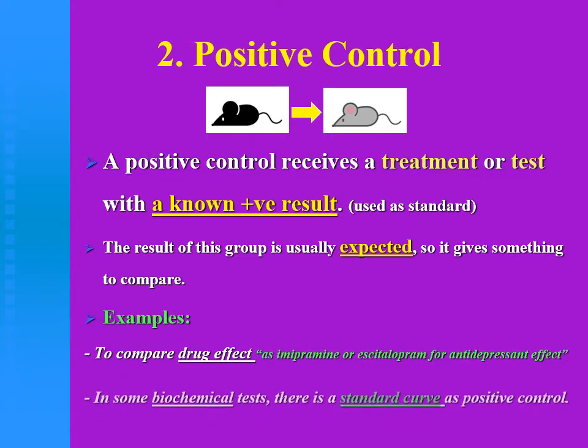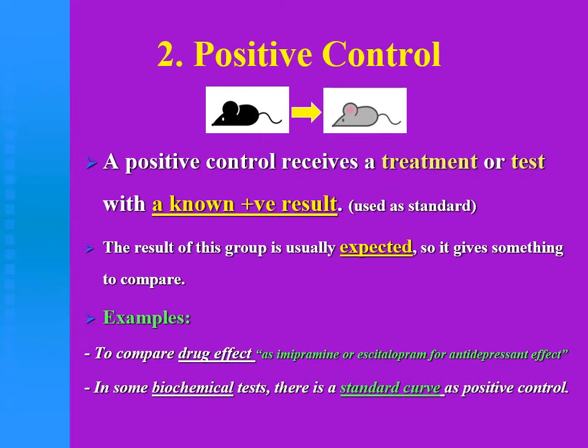For example, if you wanted to test or explore the effect of a new drug — a drug which is not an antidepressant — to see if this drug has an antidepressant effect or not, in this case we can use a group given imipramine or escitalopram, which are TCAs or SSRIs used for treatment of depression. They have a known antidepressant effect, and we compare the new drug with the result of this group, which is the positive control.